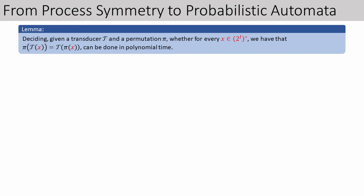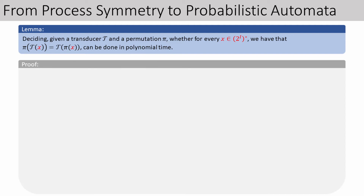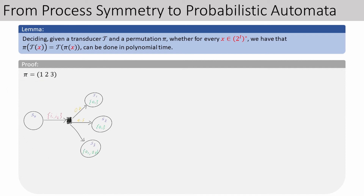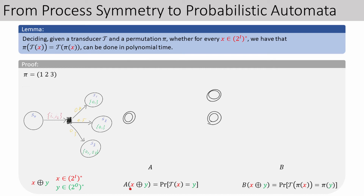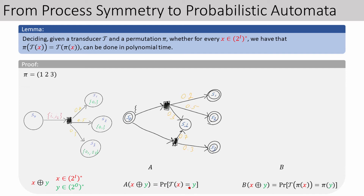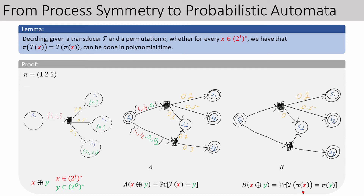We show that the problem of deciding whether a transducer T is pi-symmetric is solvable in polynomial time. Given a transducer T and a permutation pi, we construct two probabilistic automata A and B, where A accepts the word w — a combination of an input word x and an output word y — with probability p, if and only if the probability that the transducer outputs y when reading x is p. So we basically push in the outputs. The automaton B is built in the same way, but simulates the permuted inputs and outputs. For example, let's take the transducer we had before, specifically the single transition.